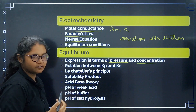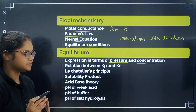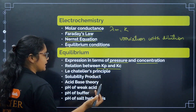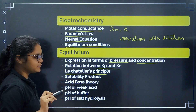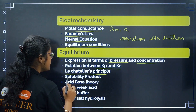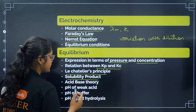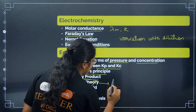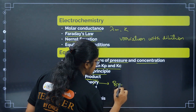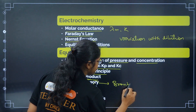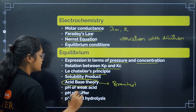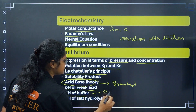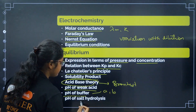In Equilibrium, understand how to write Kp in terms of concentration, the relation between Kp and Kc, and Le Chatelier's principle — very very important. Also cover solubility product general formula and acid-base topics: Brønsted theory, how to find the conjugate base and conjugate acid, pH of weak acid, and pH of buffer — both acidic and basic buffer.